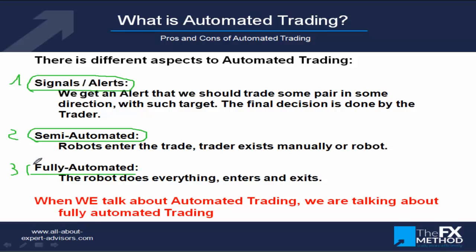The ideal is to let the robot do everything: enter the market, exit the market, move the trailing stop — everything fully automated. Not only the entries, but the exits, trailing stops, and position management as well. Everything can be done by a robot. Even the combination of many of those can be automated — you could automate when to stop bots, when to start bots, when to have more money management. All of this can be automated, not necessarily in MetaTrader, but a big chunk of it.